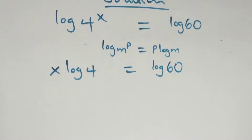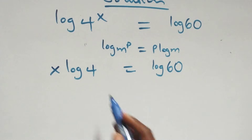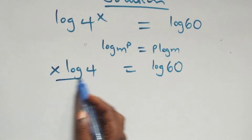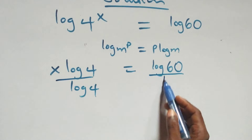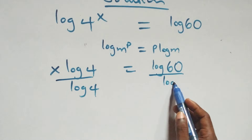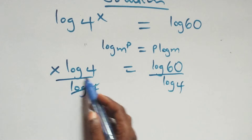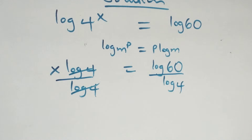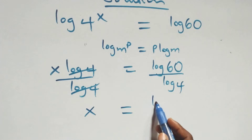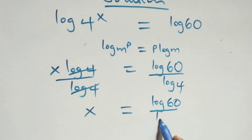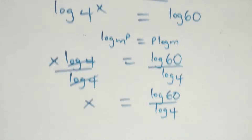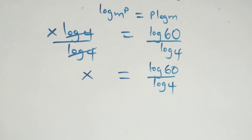At this next step, we divide both sides by log 4. Divide this side by log 4 and also divide this side by log 4. The log 4 terms cancel each other, and we have x equals to log 60 over log 4.